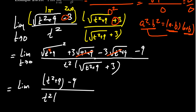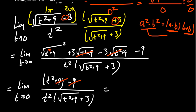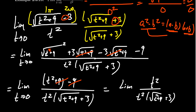So we have t squared plus nine minus nine in the numerator, over t squared times the square root of t squared plus nine plus three, as t approaches zero.